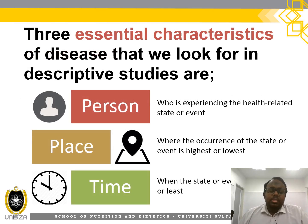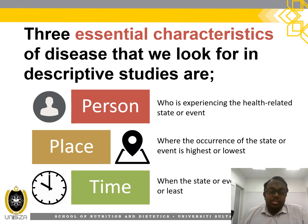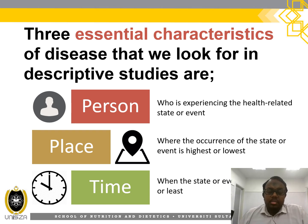There are three essential characteristics of a disease that we look for in a descriptive study: person, place, and time. Person is who is experiencing the health-related state or event. Place is where the occurrence of the state or event is highest or lowest. And time is when the state or event occurs most or least.